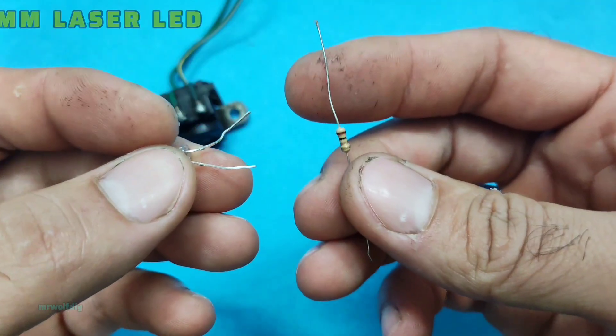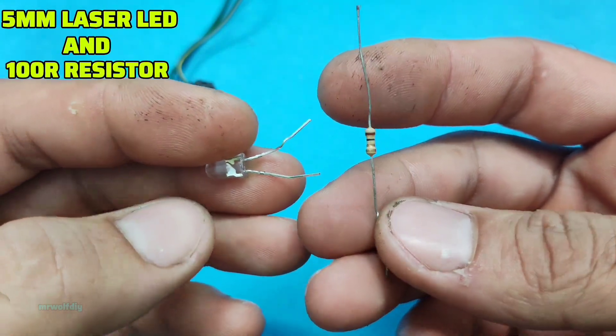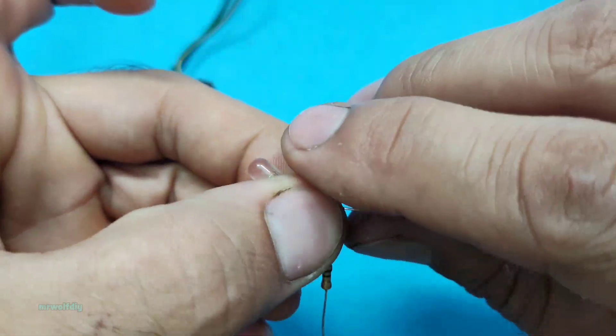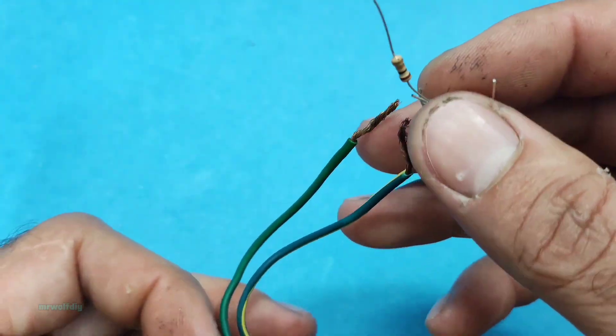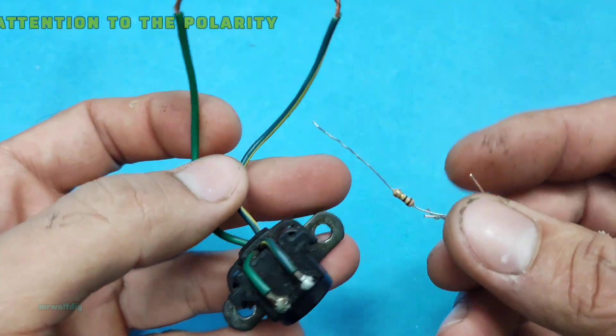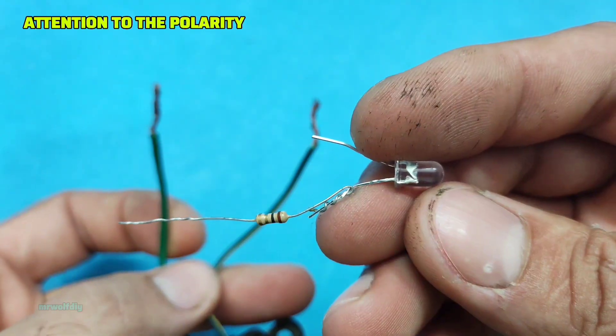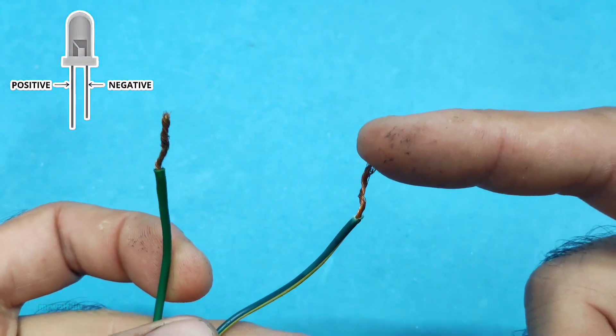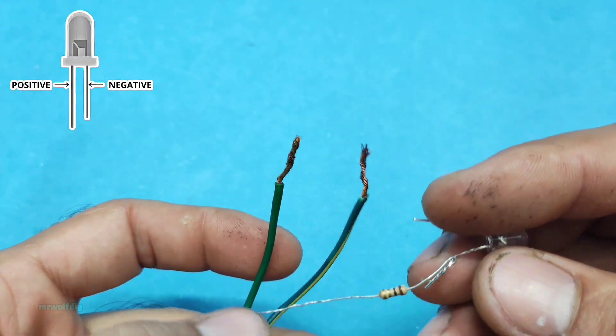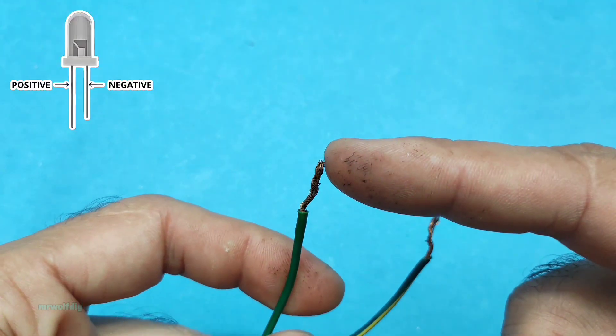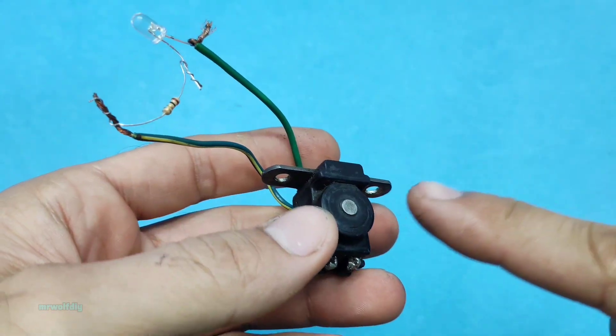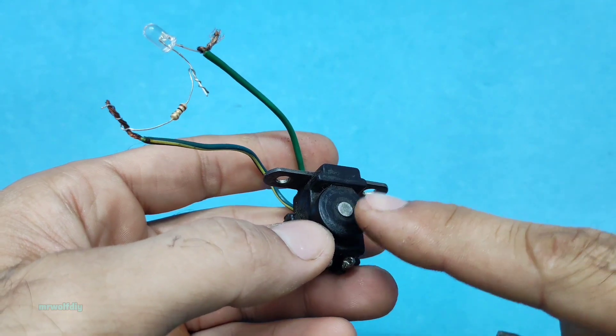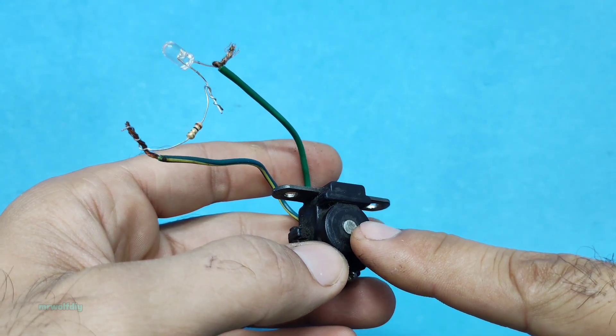Connect an LED in series with a 100 ohm resistor and connect it to the pickup coil in correct polarity. Positive of LED goes to the positive of the pickup, and negative one goes to the negative. That's it. Now when we trigger the pickup, the LED should light up.